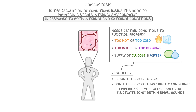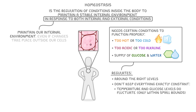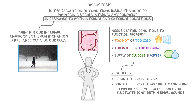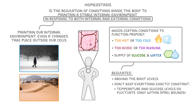This last bit, about being in response to changes in both internal and external conditions, just means that we can maintain our internal environment even if changes are taking place outside of our cells. For example, if we walk out in the snow or we run in the Sahara Desert, we can still keep our cells at 37 degrees by regulating our body.